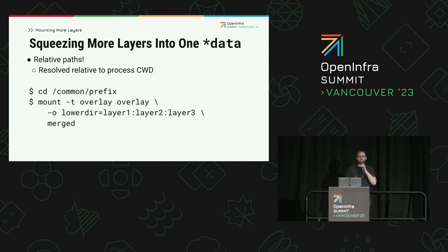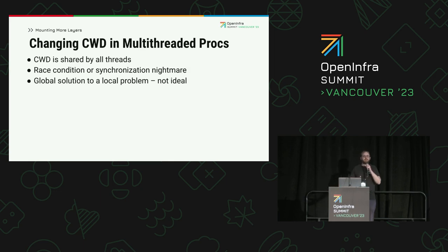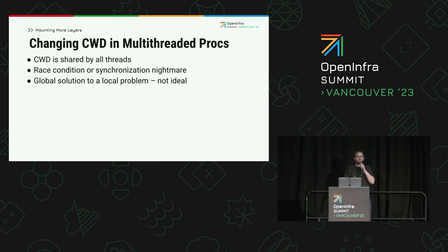One way to increase the number of layers we can squeeze into one mount option string is to reduce the redundancy. The directory paths in those mount options can be made relative to the process's current working directory, so we can change our working directory to the common prefix and squeeze a few more layers in. Now, changing the working directory temporarily is fine in a single-threaded process, but dockerd is multi-threaded. The current working directory is global state shared by all threads, so changing it would affect every open call and every other thread until it's changed back. If two threads tried to concurrently mount container file systems, they would collide.